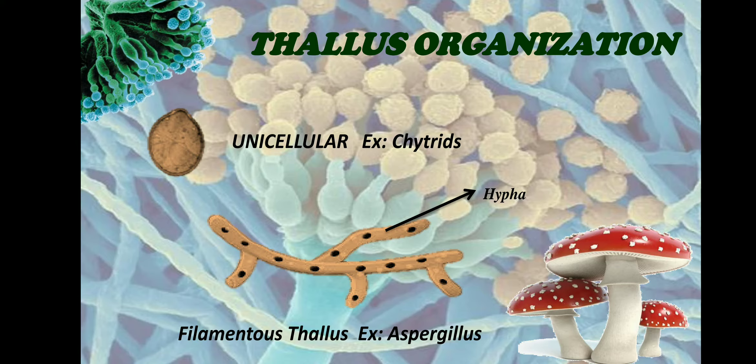The thallus of filamentous fungi appears as long thread-like structures which are tubular in nature. These long thread-like tubular structures are called hyphae — they are thread-like and tubular filaments.